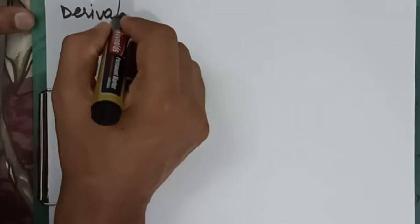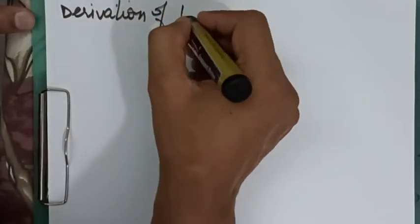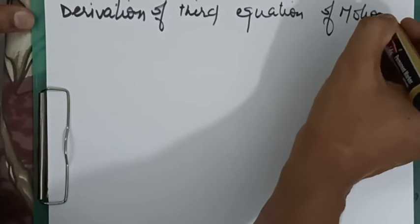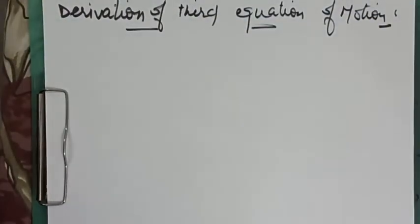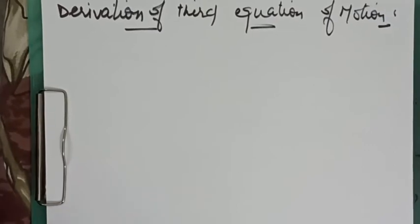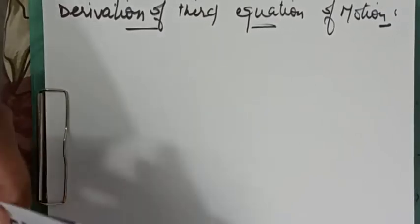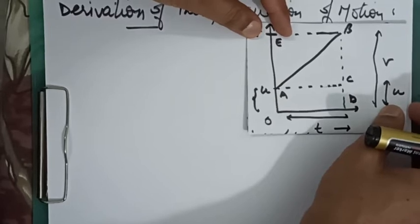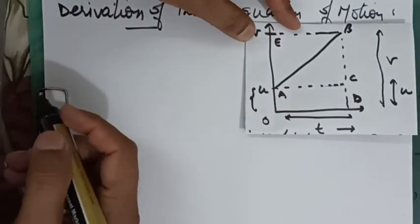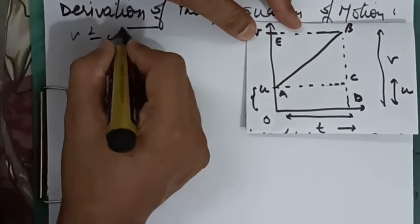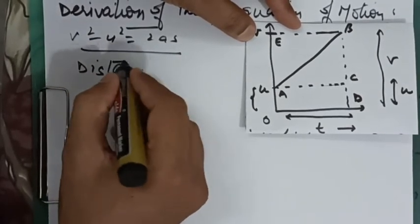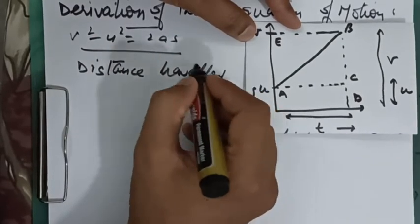Now the derivation of the third equation of motion. We will use the same velocity-time graph for a body moving with uniform acceleration and having some initial velocity u. The third equation is v² − u² = 2aS. Again we start from the distance travelled.